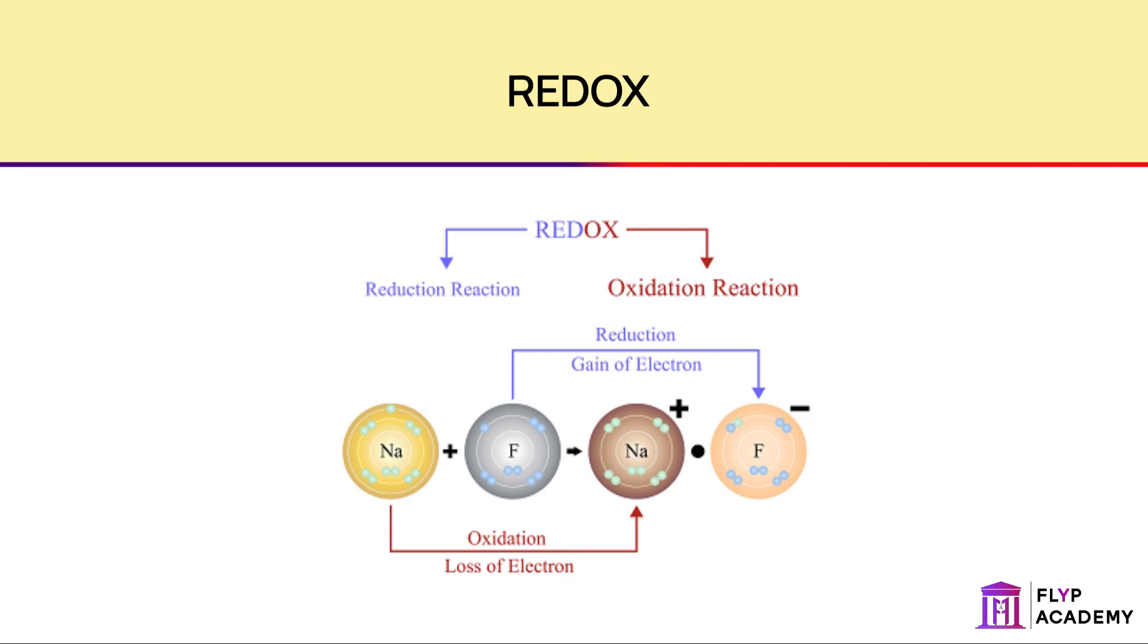A more reactive element is able to displace the less reactive element from its compounds. Therefore, fluorine gas can be used to oxidize chloride, bromide and iodide compounds. Chlorine gas can oxidize bromide and iodide compounds, and bromine is able to oxidize iodide compounds. The reducing ability shows the opposite trend, as it should. The most effective reducing halogen is iodine, and the least effective one is fluorine.